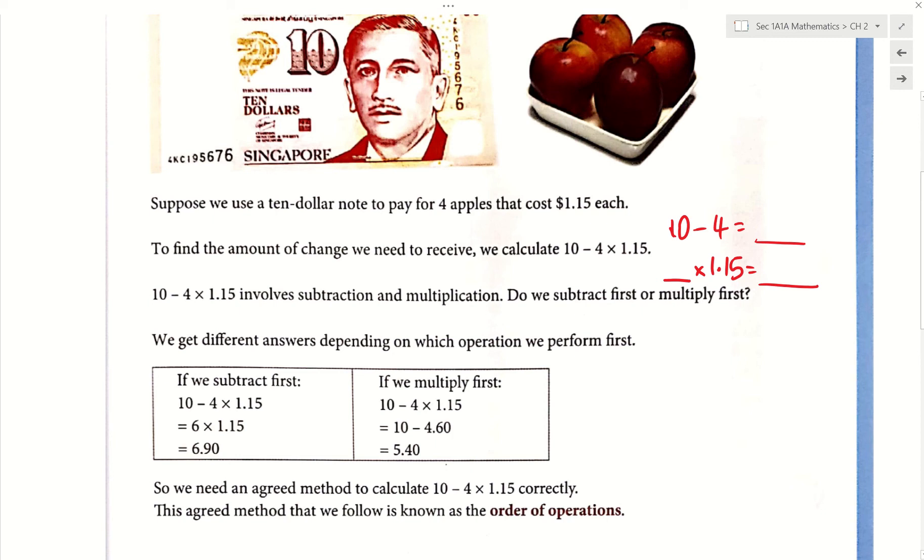What do you get for this half? 6. Here you get 6, right? Then what do you get? 6.90. Okay, this is if we do the subtraction first.